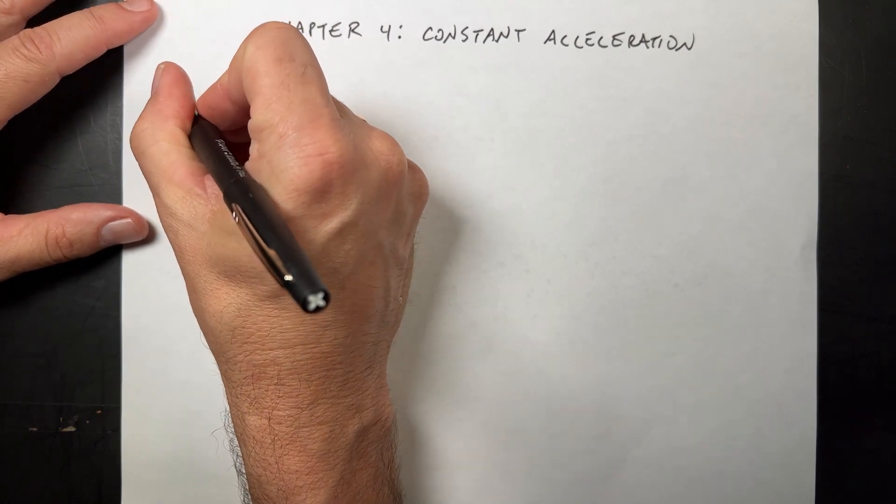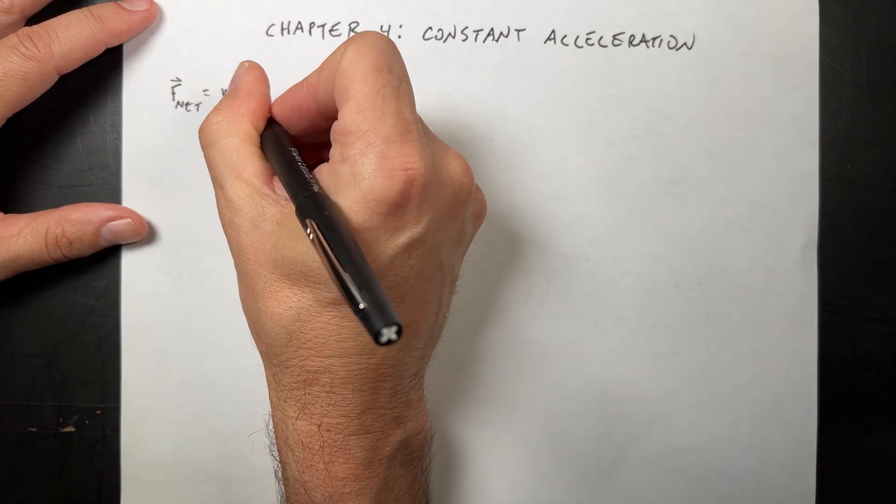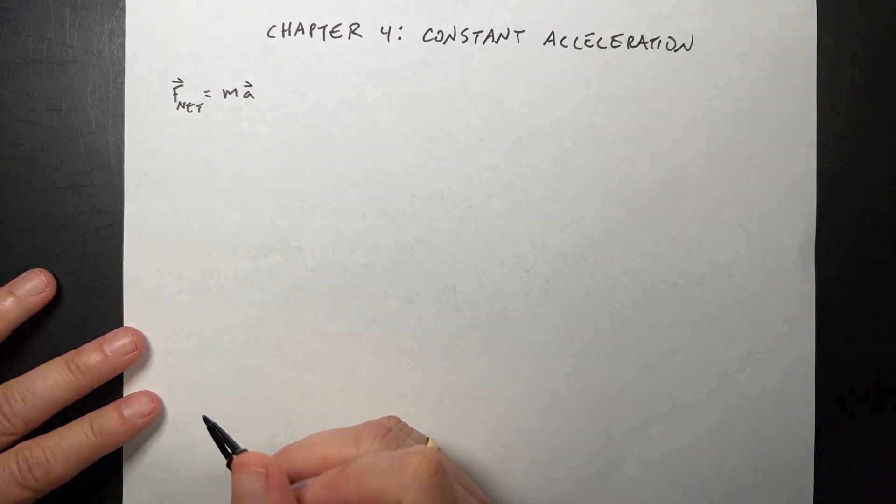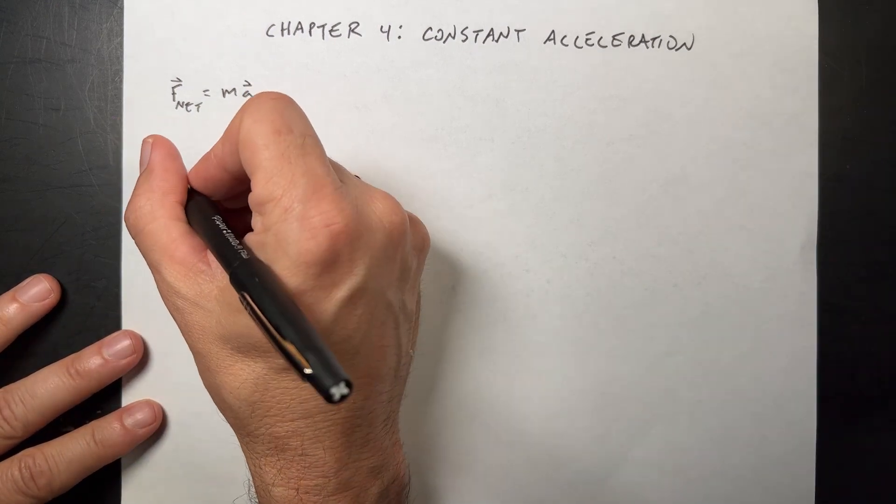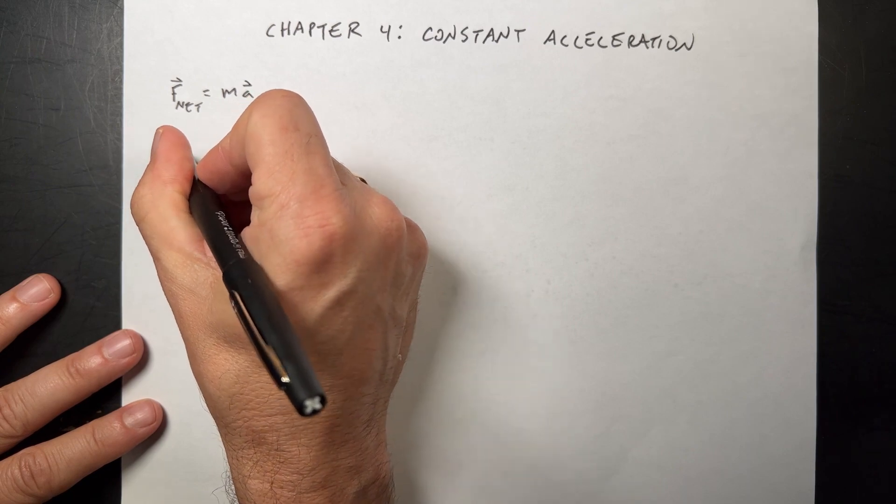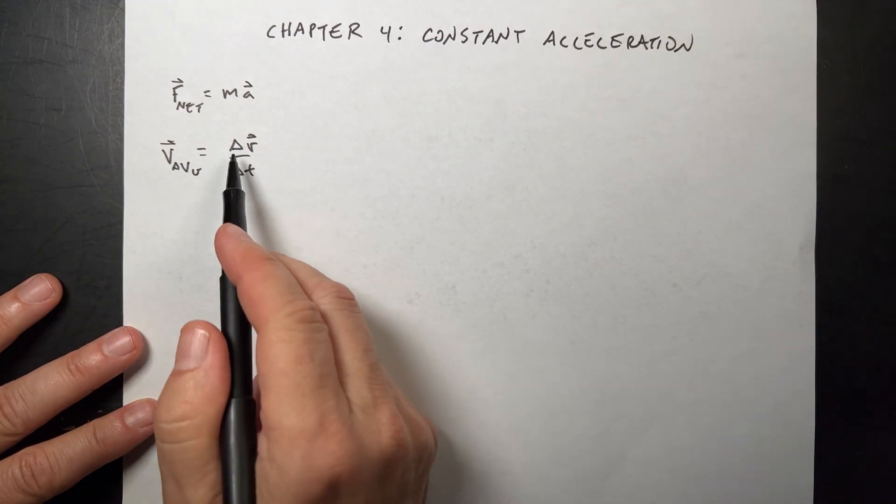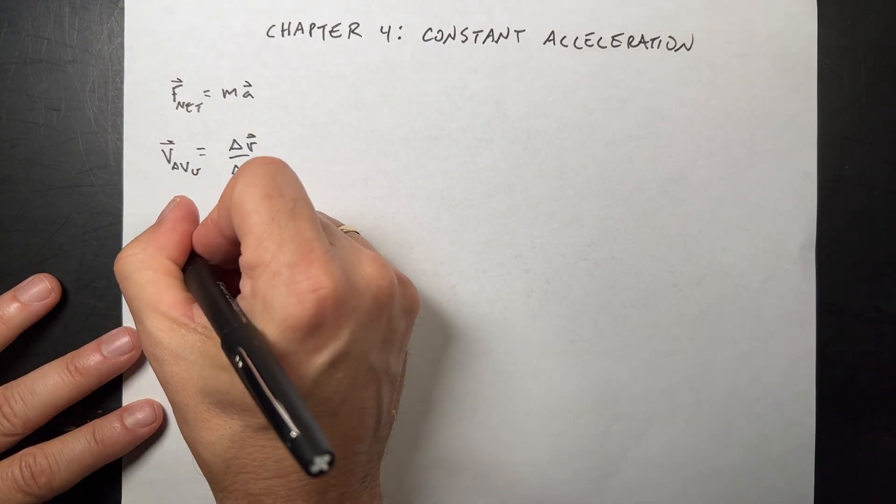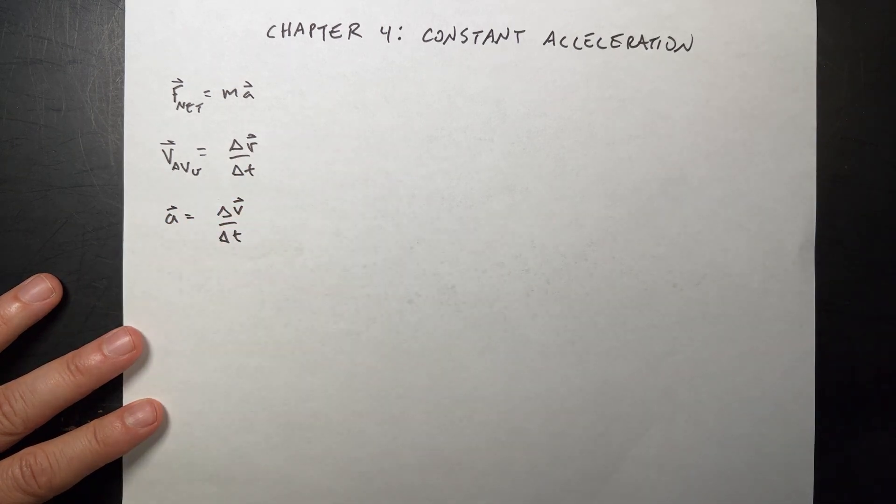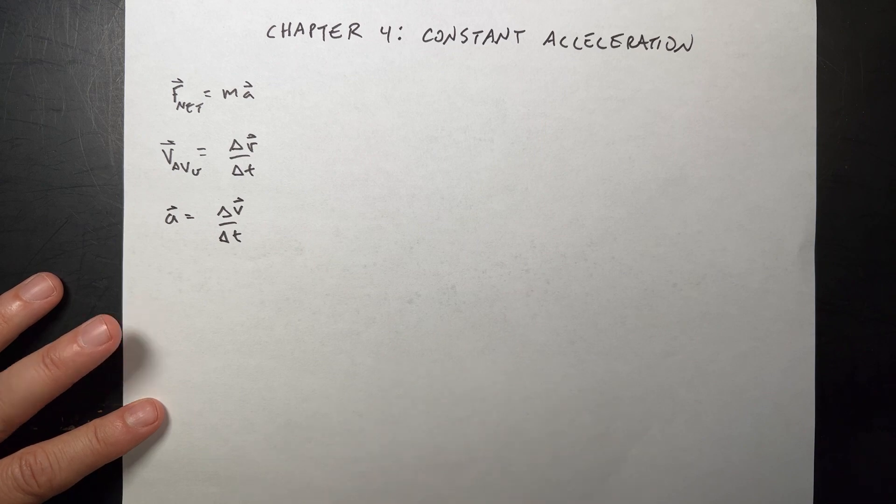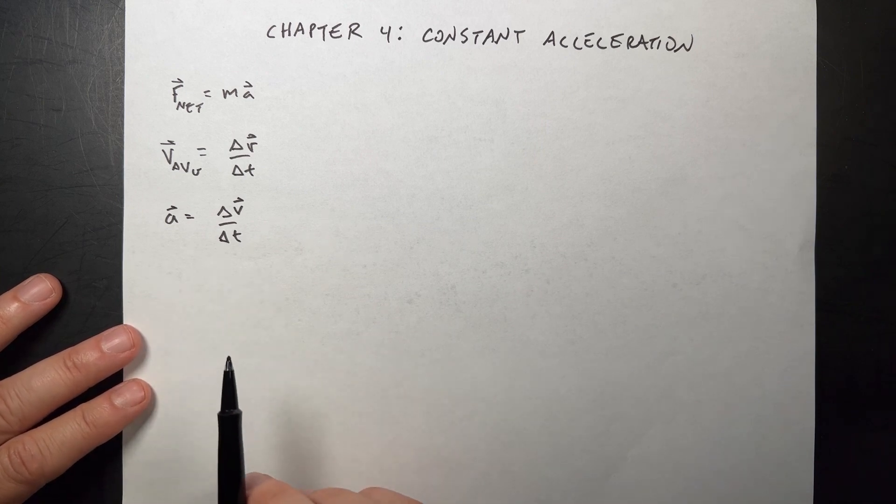Number 1, Newton's Second Law. I'm going to write F net equals mass times acceleration. And then we have the definition of displacement, velocity, and acceleration. Average velocity is the change in position, which we call displacement with respect to time. Delta R, delta T. R is the position. And then the acceleration is the change in velocity with respect to time. After that, we have some special forces: gravity, friction, normal force, tension. But that's really the most important thing right there.